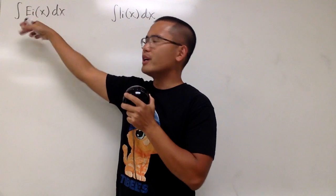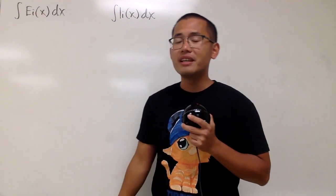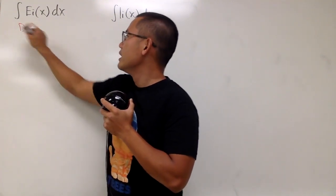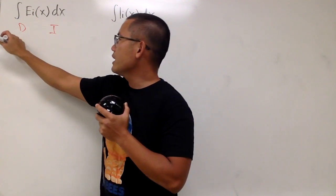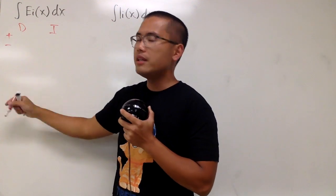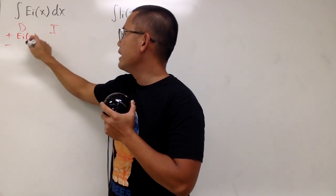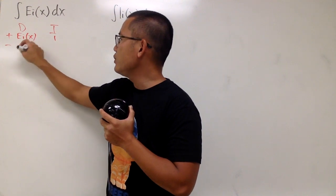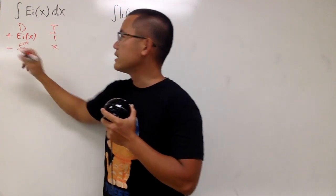We don't know how to integrate ei that well yet, but we do know how to differentiate ei pretty well. So why don't we do integration by parts? So that way we can actually differentiate ei. Don't forget the plus-minus on the side just to get ready. Differentiating ei and integrating 1. Differentiating ei, we get e^x/x, and integrating 1, we get just x.